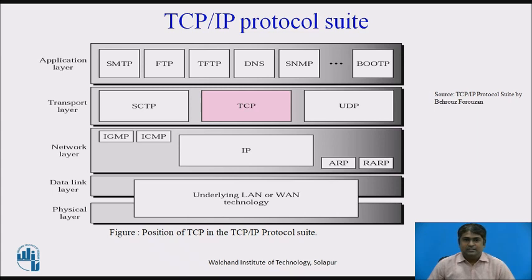At the network layer, the IGMP, ICMP, and IP protocols are there, along with ARP and RARP protocols. At the transport layer, there are three protocols: UDP, TCP, and SCTP.